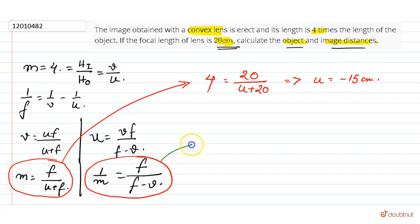And then when we substitute values and evaluate this formula, 1 upon 4 is equal to 20 upon 20 minus v. So this will be minus 60 centimeters. We have found both the object distance and image distance.